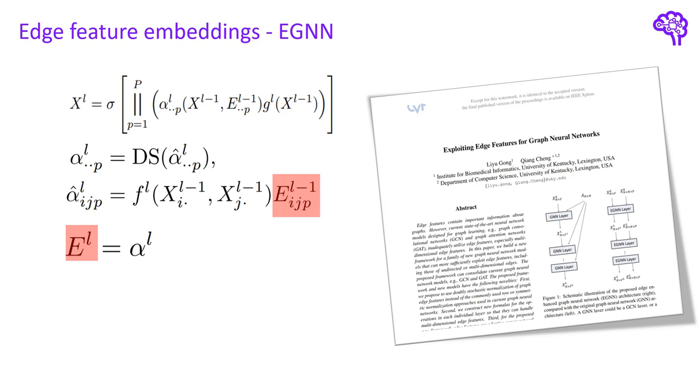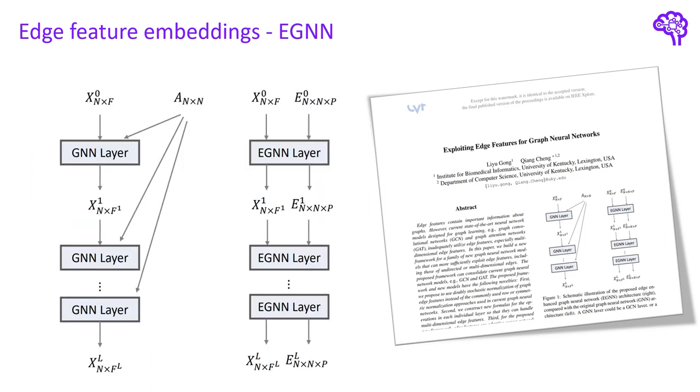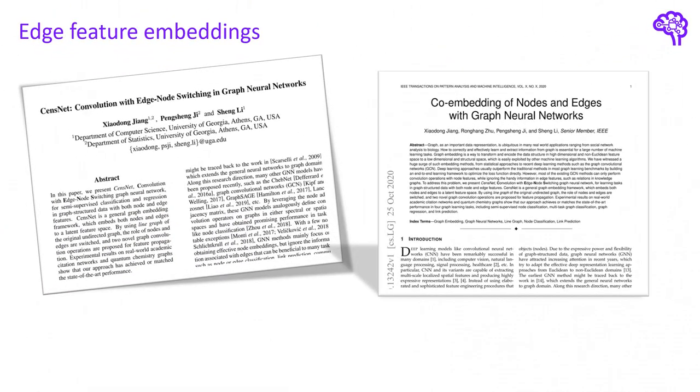So instead of using the adjacency matrix and calculating the node embeddings, as on the left here, we now use both the edge and node features to update the embeddings. Again there exist a couple of other papers that go into a similar direction and I display some of them here on this page. SenseNet for instance also alternates node and edge embedding layers, but without using the attention mechanism. The co-embedding of nodes and edges is basically the same paper as it comes from the same group of researchers.